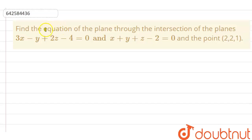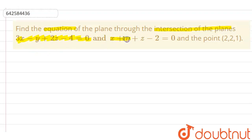Here the question is: find the equation of the plane through the intersection of the planes given as 3x minus y plus 2z minus 4 equals 0, and the equation of another plane given as x plus y plus z minus 2 equals 0, and the point given is (2, 2, 1).